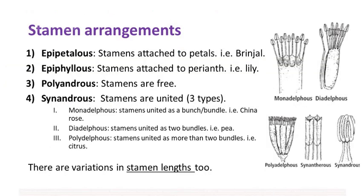Flowers are also categorized based on their stamen arrangement. Epipetalous flowers have stamens attached to petals, such as in brinjal. Epiphyllous flowers have stamens attached to the perianth — lily is a good example. In polyandrous flowers, stamens are free, while in synandrous flowers, stamens are united. Synandrous flowers are of three types: monadelphous, where stamens are united as one bundle, such as in China rose; diadelphous, where stamens are united as two bundles, as in pea; and polyadelphous, where stamens are united as more than two bundles, as in citrus.